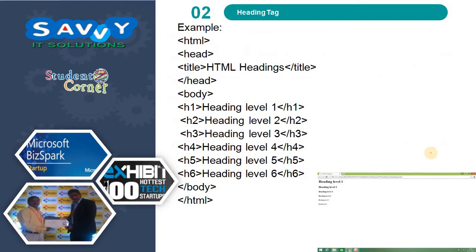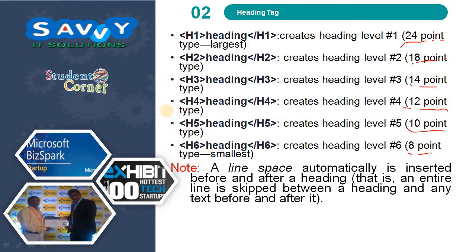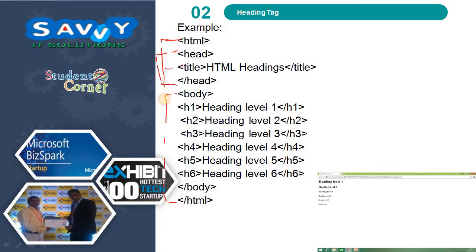When we write an HTML document, it starts with the html tag and ends with the closing html tag. Similarly, the head section starts and ends, and in between we write the title tag — for example, 'HTML Headings.' In the body section we apply heading tags from h1 to h6. The output shows h1 as the biggest and h6 as the smallest font.